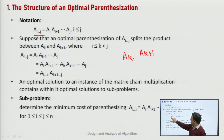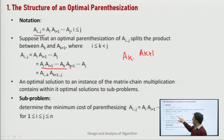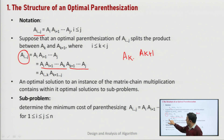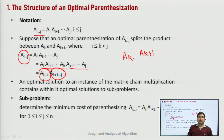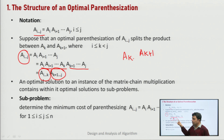In dynamic programming, the optimal solution of any problem depends on the optimal solutions of its sub-problems. So we need to find the optimal solution of these sub-problems first. Our full problem is A_{1..n}, and we need to find the value M[1][n]. We define a matrix M to compute the minimum cost table.